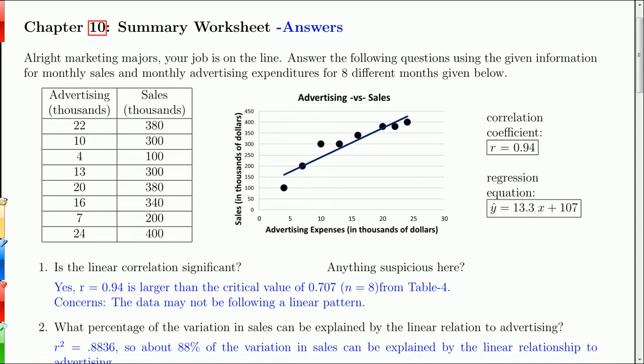We start off with some advertising versus sales data. We have eight months worth of data, not in any particular order here. On this month, $22,000 was spent on advertising and $380,000 was made in sales. If you do a scatter plot for all of these data points, you get this right here.